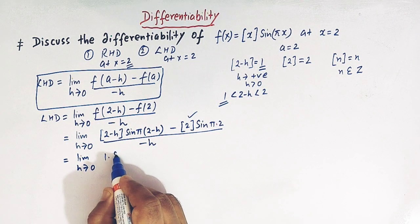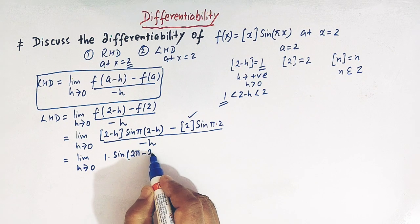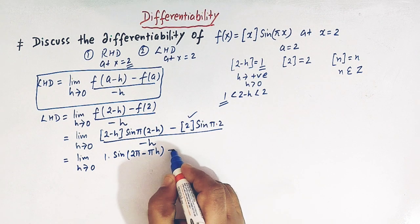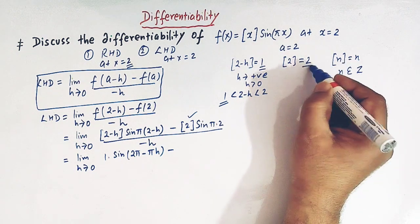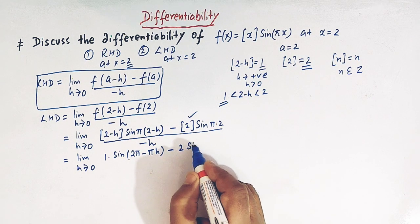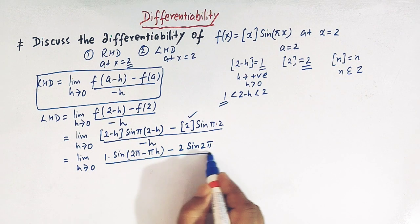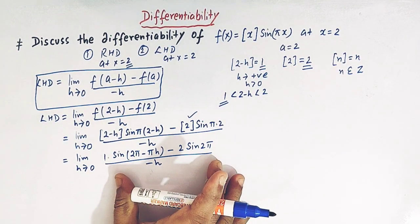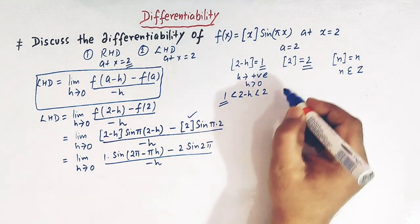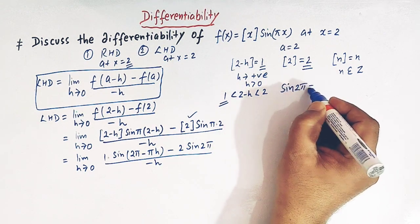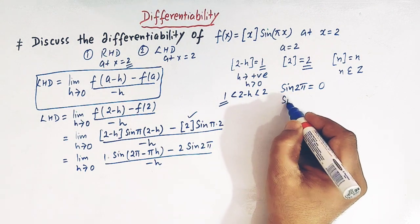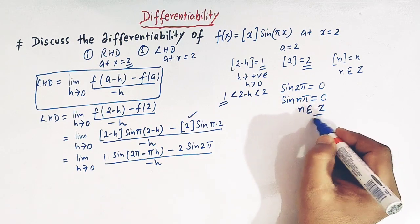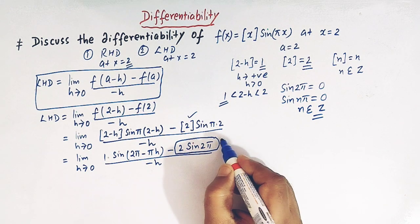So we write limit h→0 of [1·sin(2π − πh) − 2·sin(2π)] / (−h). Since sin(2π) = 0, because sin(nπ) = 0 for n belonging to integers, this term vanishes. Now we have sin(2π − πh) remaining.